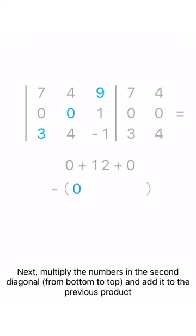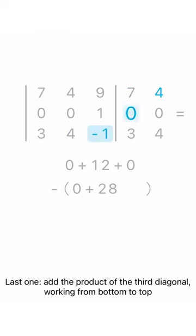Next, multiply the numbers in the second diagonal from bottom to top and add it to the previous product. Last one: add the product of the third diagonal, working from bottom to top.